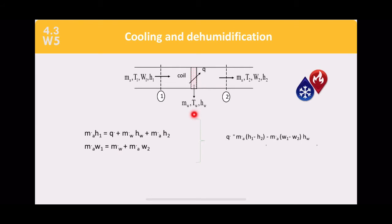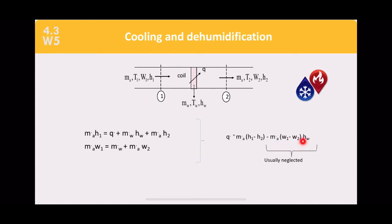The main equation is: Q = m_a·(h1 - h2) - m_a·(ω1 - ω2)·h_w. The cooling load involves two components: the enthalpy difference and the moisture removed via condensate. Sometimes the condensate term is neglected when only air is used in the load calculation. For latent cooling, the moisture term must be included.